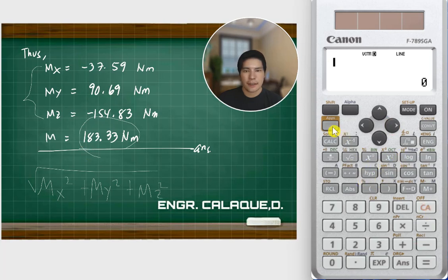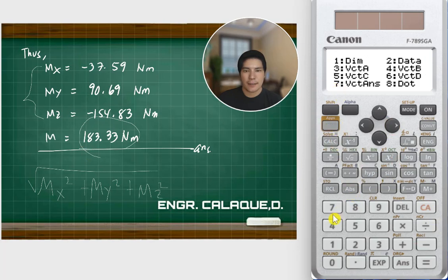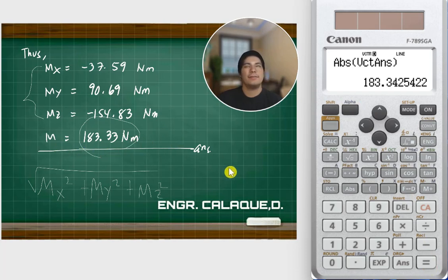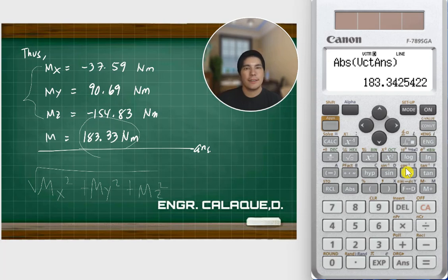To get the resultant, just click Abs and select the stored answer vector — it's automatically stored in the calculator. We get 183.34. If you like this video, consider subscribing to our YouTube channel and click the notification bell for newly uploaded videos. Keep watching and keep learning — see you in the next video!